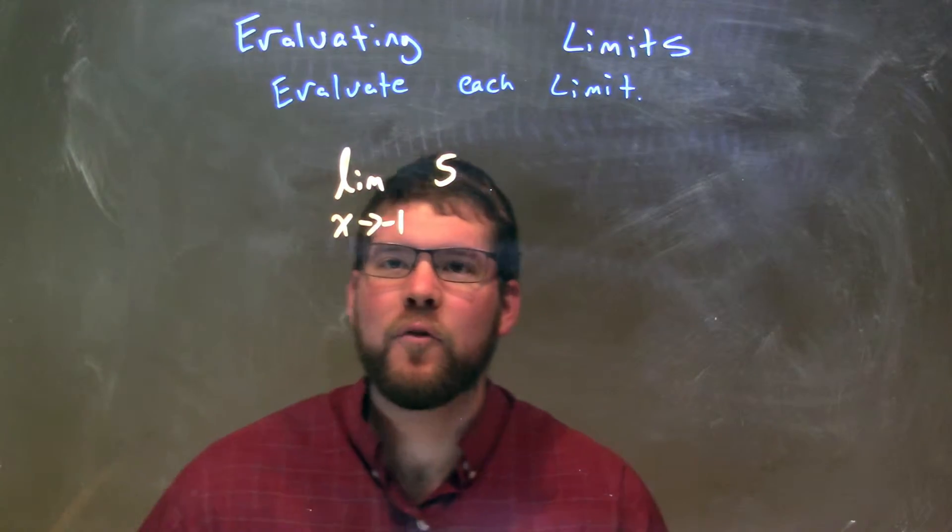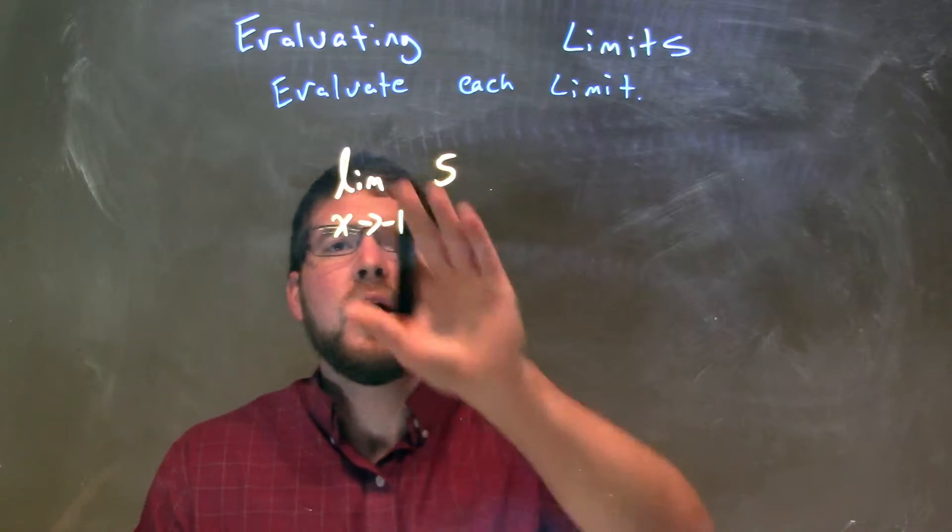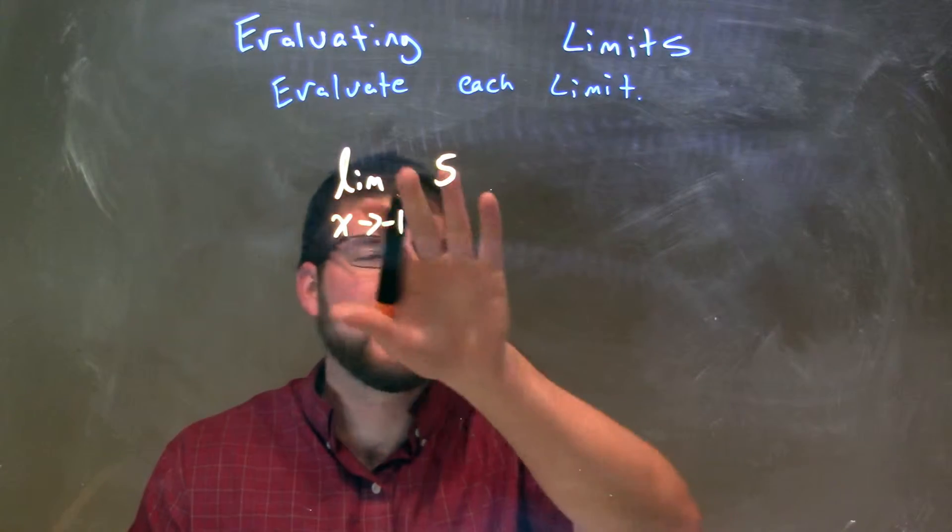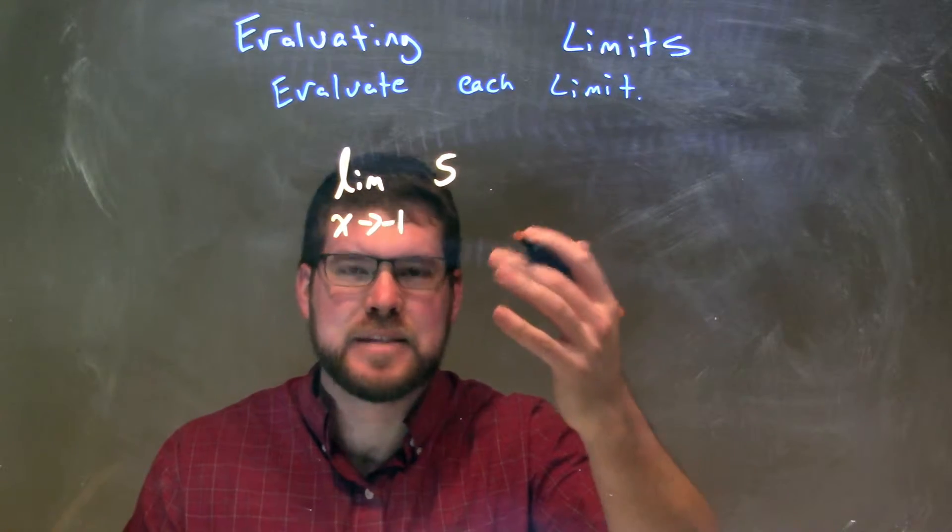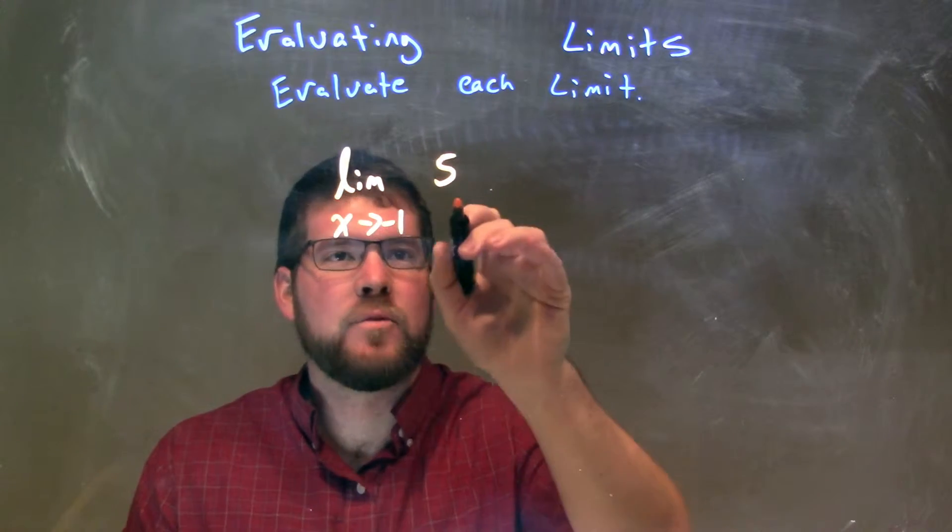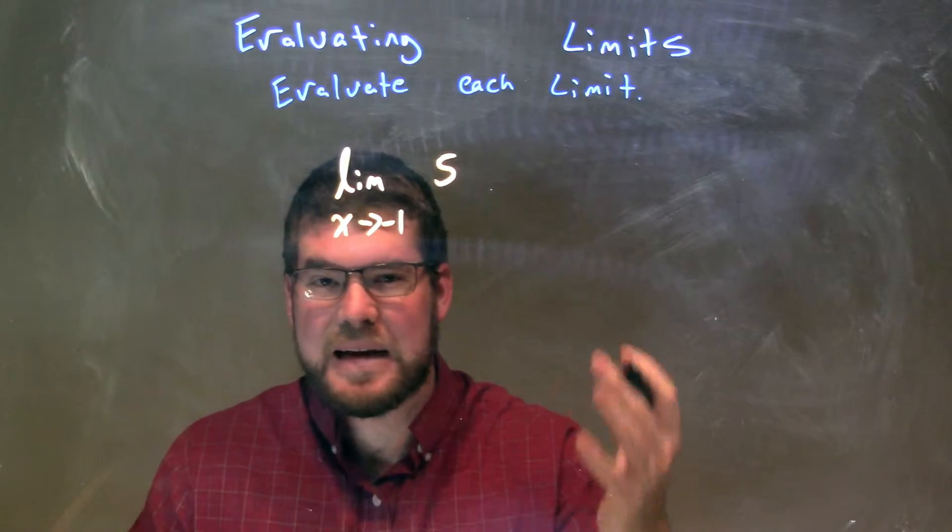Now, one thing we know is that 5 is just a constant, right? So as x approaches negative 1, we know the graph of 5, Y equals 5 in a sense. If we think of it like that, as x approaches negative 1 from there, there's no x value to plug in.